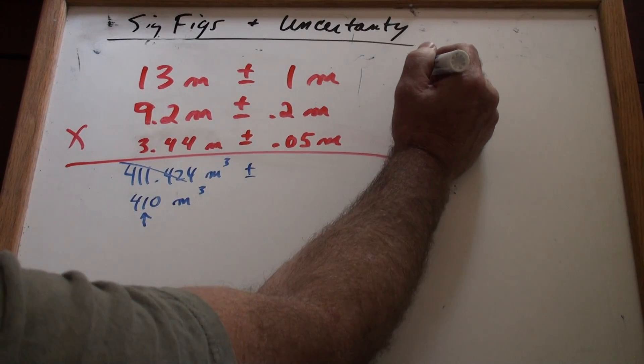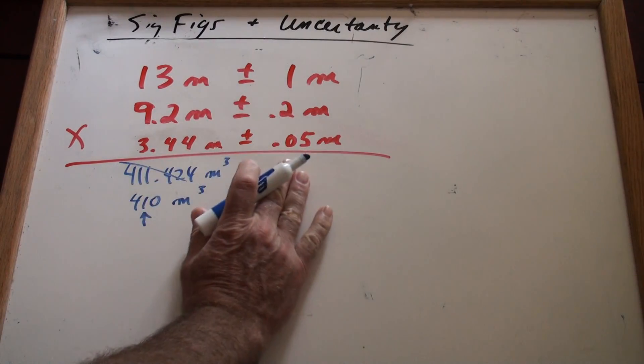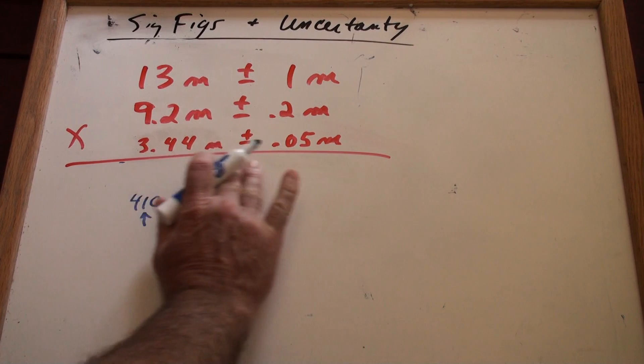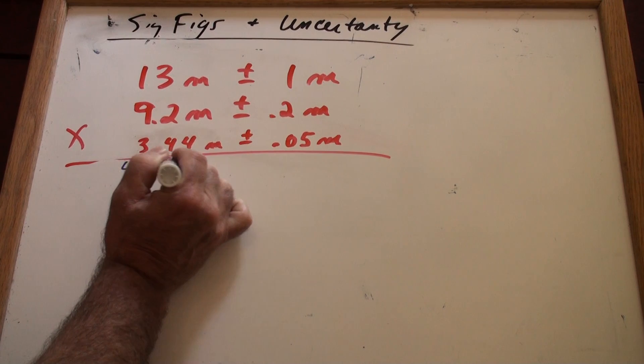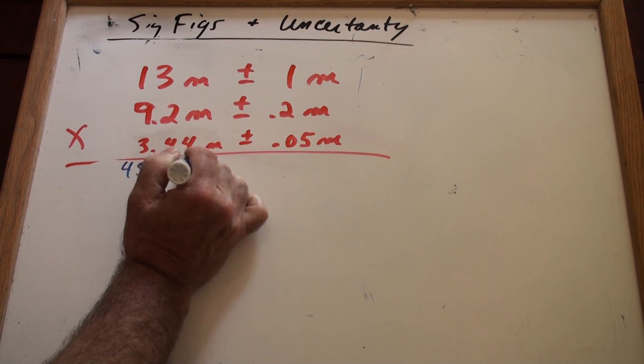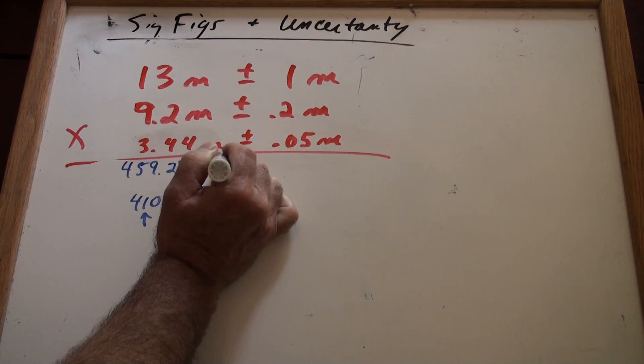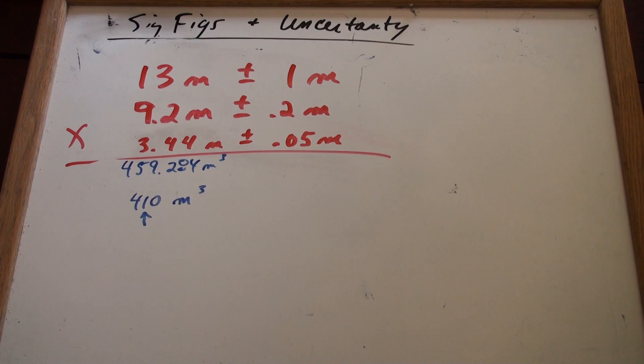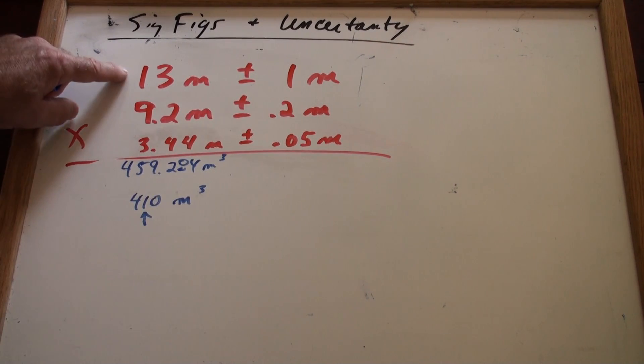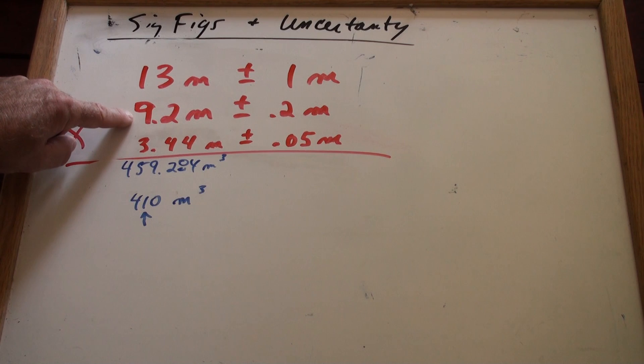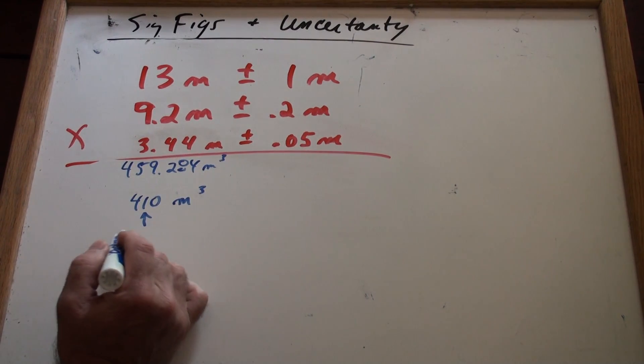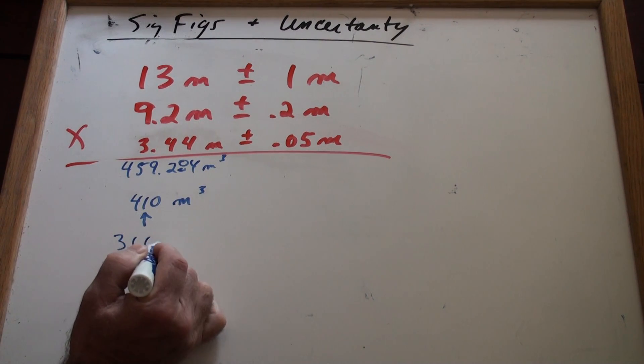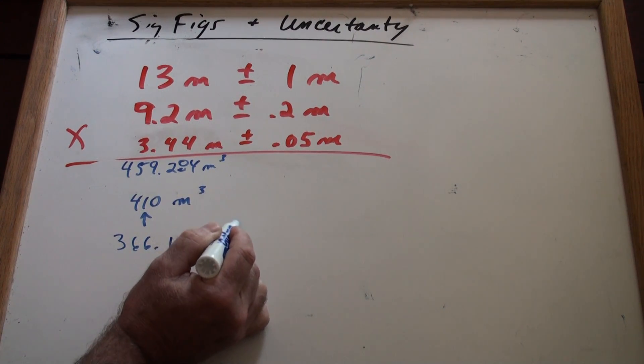that gives you something like, let's see, where am I going to put this? That's going to give you a high of 459.284 on your calculator. You haven't rounded yet. Okay? The lowest it could be, if you multiply the lowest this could be, which is 12 times 9.0 times 3.39.